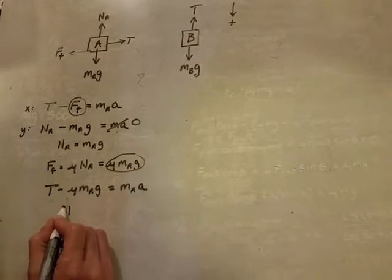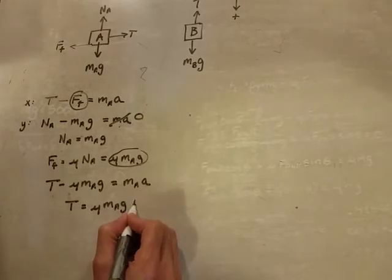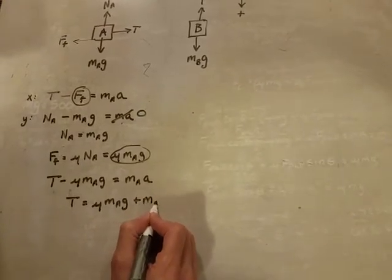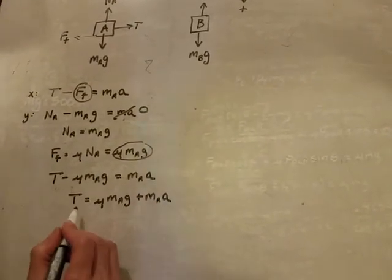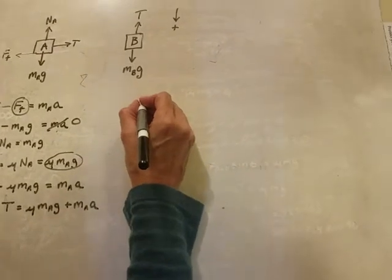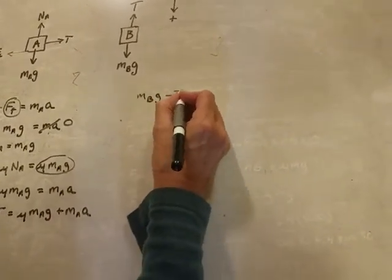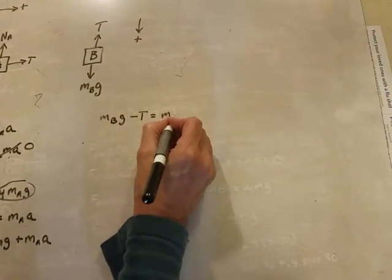Eventually I'll use that equation to help me get T with numbers. So now let's go to this side. We have MBG minus T is equal to MBA.